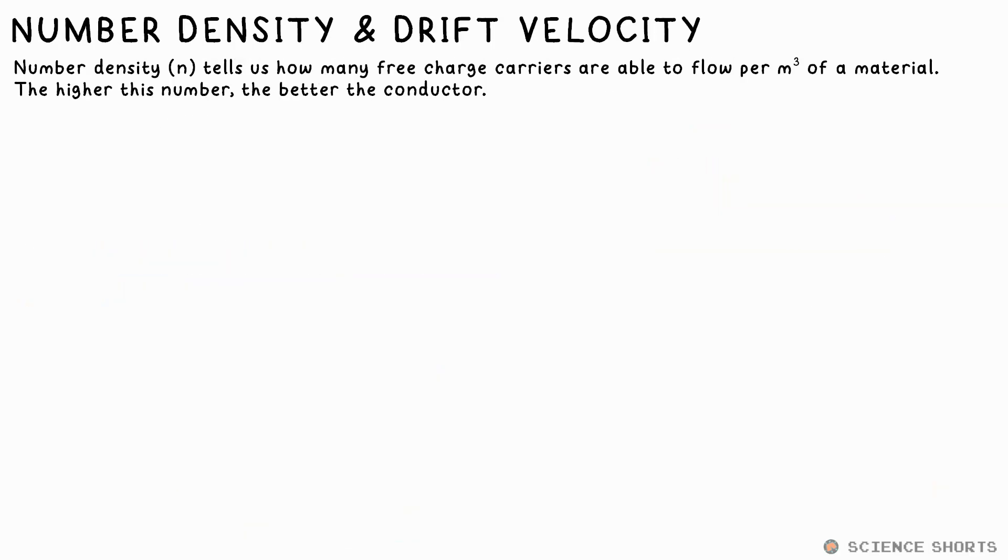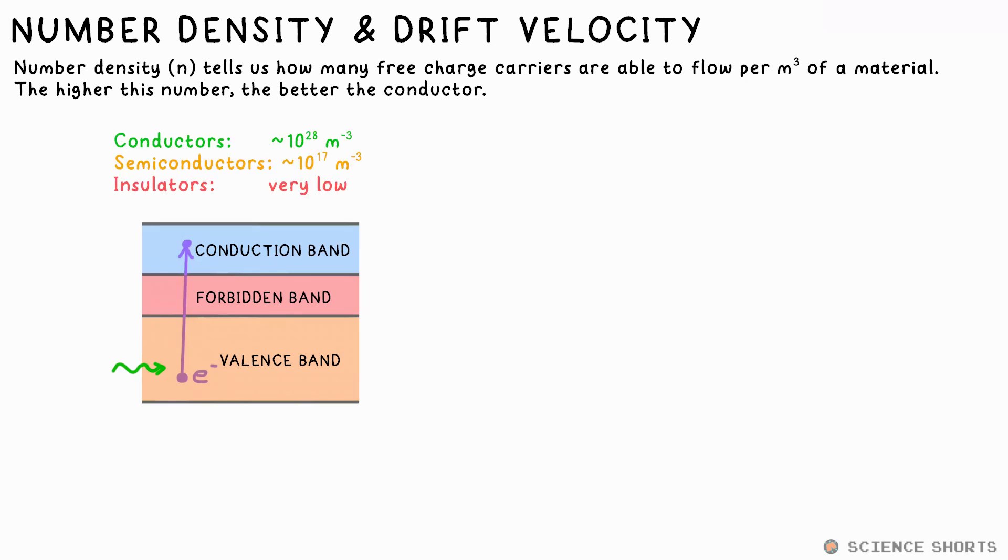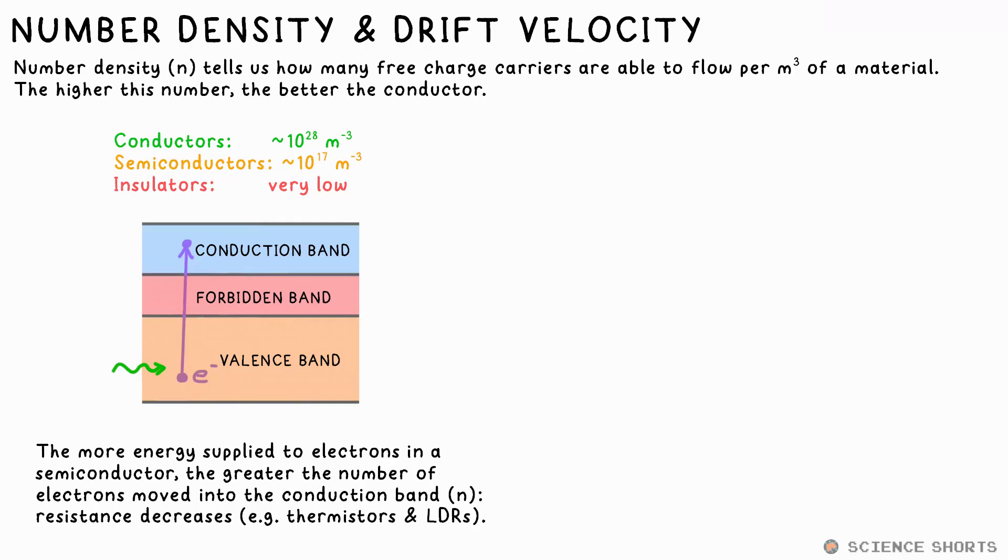Semiconductors sit between insulators and conductors, you might have guessed. We can tell how well a material conducts electricity by comparing their number densities, that is, how many charge carriers there are per meter cubed. For conductors like metals, the number density is around 10 to the 28. Semiconductors around 10 to the 17, give or take. Moving more electrons into the conduction band increases this number. Insulators, of course, have a very low number density.